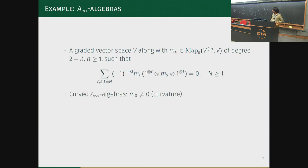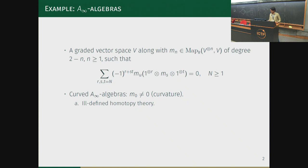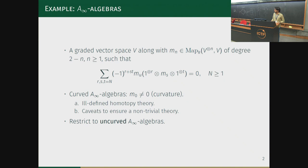If m_0 is not zero—where n ranges from 0 onwards—then the m_0 term is called the curvature, and such algebras are called curved A-infinity algebras. These are not nice objects: there is no good notion of quasi-isomorphism for curved A-infinity algebras and there are caveats in defining a non-trivial theory. For these reasons we restrict to uncurved A-infinity algebras, meaning we assume m_0 = 0.